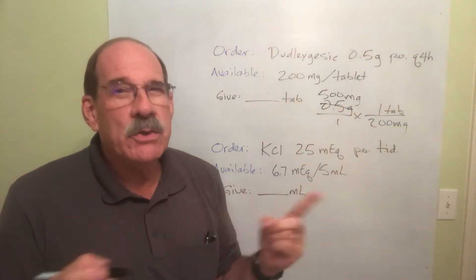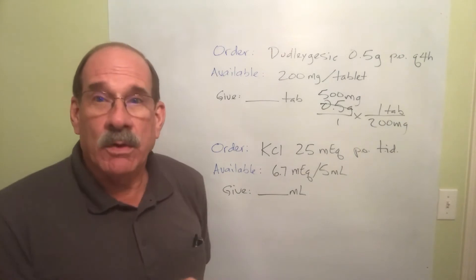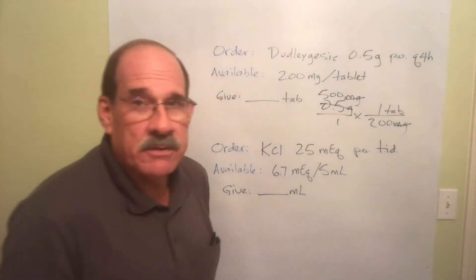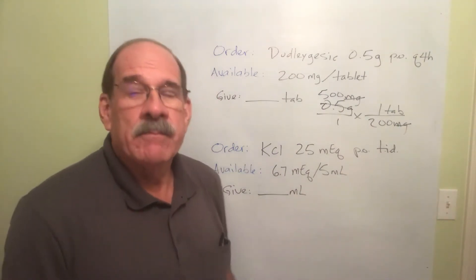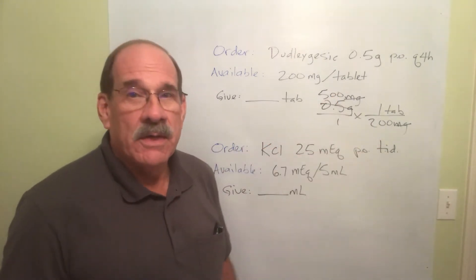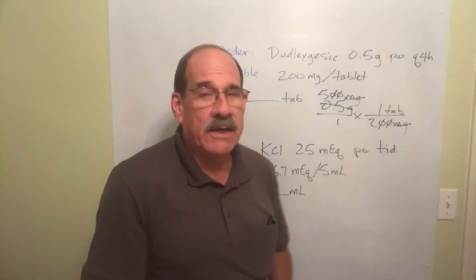What might you consider? No, what must you do next? You must cancel the words that can cancel. Milligrams there will cancel milligrams. Now you can do it if you want. I highly recommend it. Cancel the zeros. There are two up there, two down here. So these two zeros here cancel those two zeros there. And look what's left.